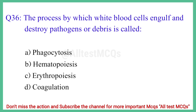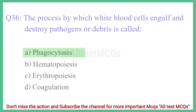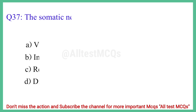Question No. 36: The process by which white blood cells engulf and destroy pathogens is called? The correct answer is option A: Phagocytosis.